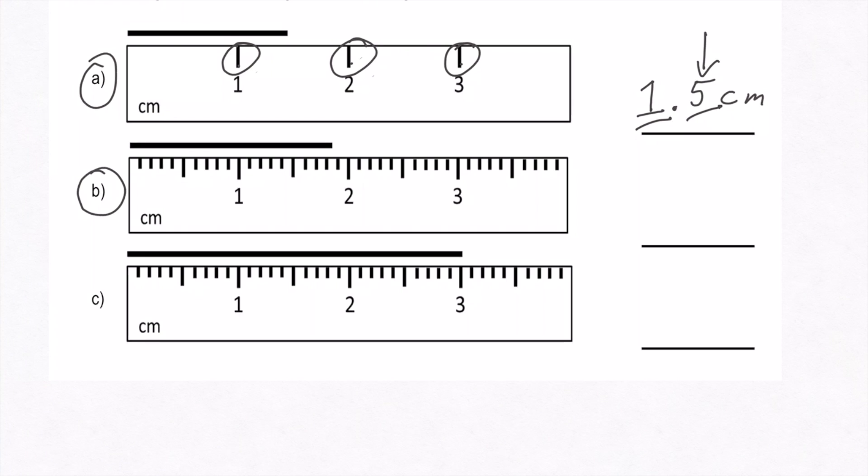Let's move on to part B, the ruler that has more hash marks. Now look between the number 1 and the number 2. This is 1 centimeter, this is 2 centimeters. In between, we have these little hash marks. Each one of those little hash marks represents 0.1 centimeters. So this is 1.1, 1.2, 1.3, 1.4, 1.5, and so on, all the way to 1.9. This means that between 1 and 2, we have hash marks that tell us a little bit more of an accurate number.